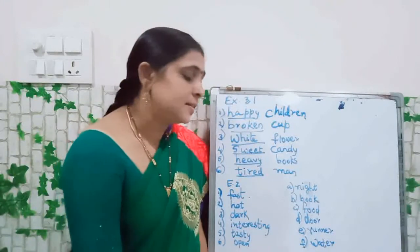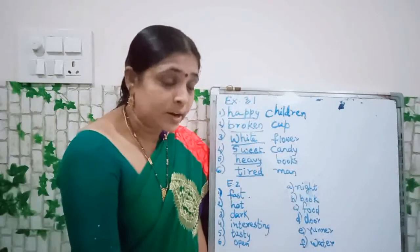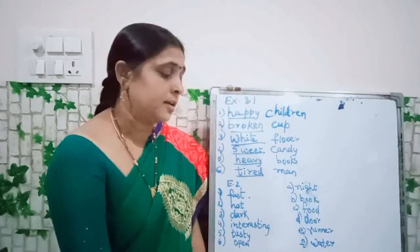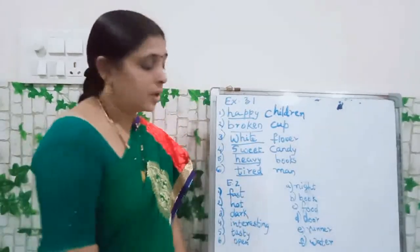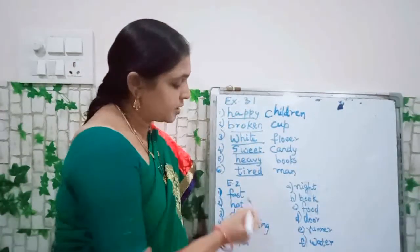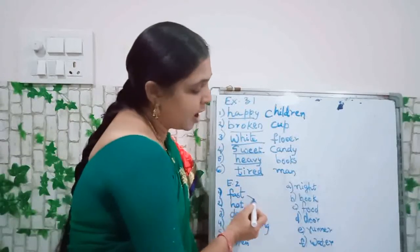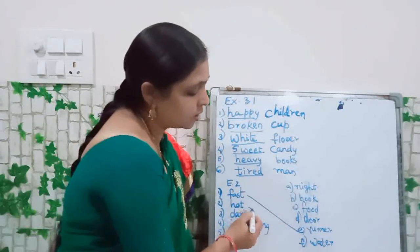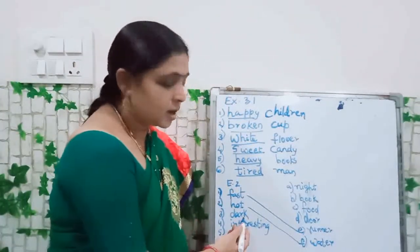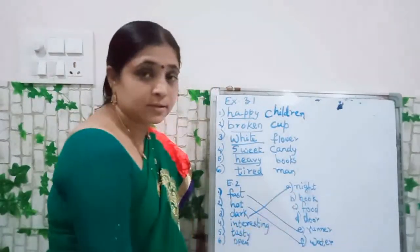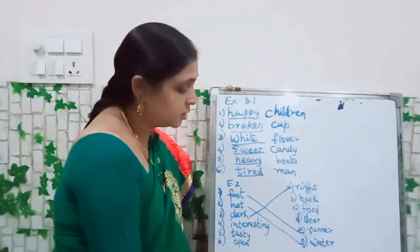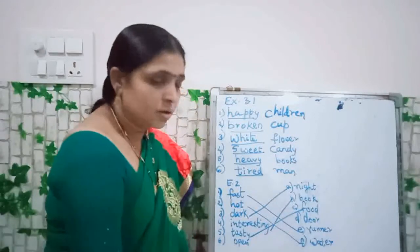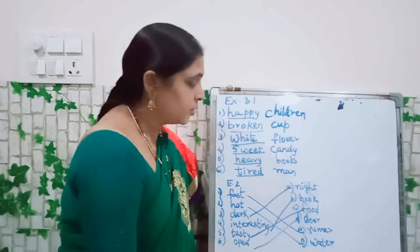Point two — match each adjective of quality with a noun that it can describe. Match correctly. First one: 'fast' — we can match to 'runner.' Fast runner. Next: 'hot' — hot water. Next: 'dark' — dark night. Next: interesting book. Next: tasty food. Next: open door. Is it clear? Now all of you copy.